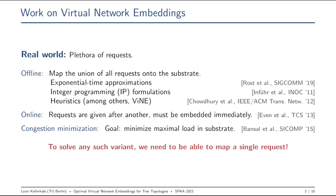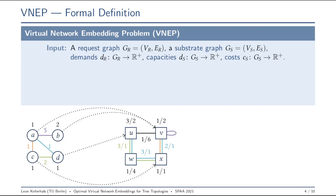The problem at heart, also the problem that we are going to discuss in this talk, is the classic virtual network embedding problem. You're given a request graph, which is here on the left side, and a substrate graph here on the right side, and some demands, which are on the edges and nodes of the request, capacities, which are on the edges and nodes of the substrate, and costs, which are also on the substrate.